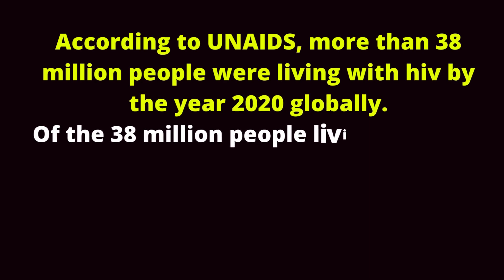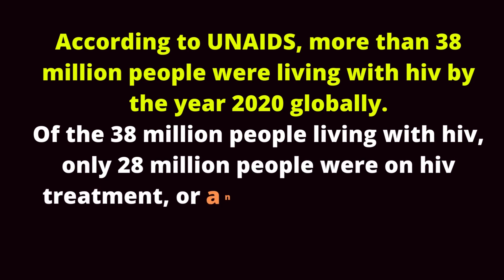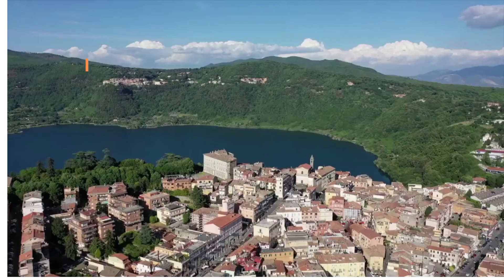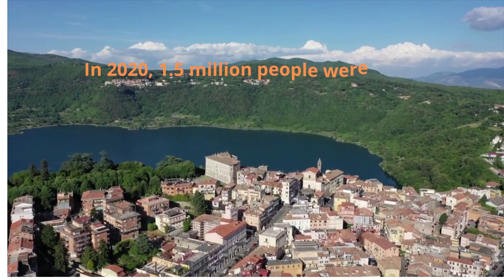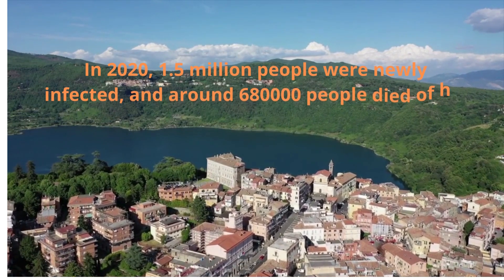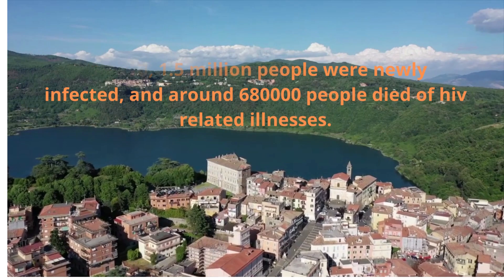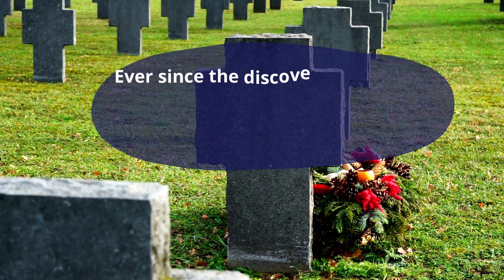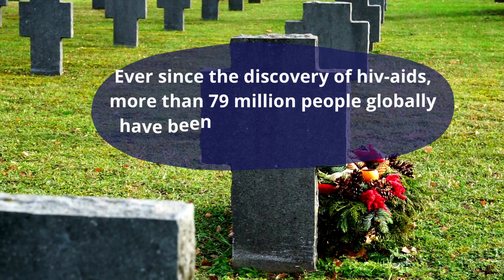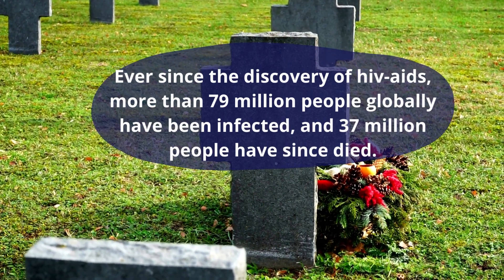Of the 38 million people living with HIV, only 28 million people were on HIV treatment, or antiretroviral therapy. In 2020, 1.5 million people were newly infected, and around 680,000 people died of HIV-related illnesses. Ever since the discovery of HIV AIDS, more than 79 million people globally have been infected, and 37 million people have since died.